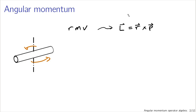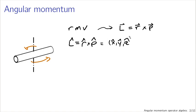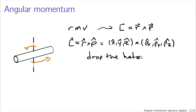We can make an analogous expression in quantum mechanics simply by replacing the arrows with hats. Let's define a momentum operator L-hat equal to R-hat cross P-hat, where P-hat is a vector momentum operator and R-hat is a vector position operator — essentially X-hat, Y-hat, Z-hat as a vector crossed with PX-hat, PY-hat, PZ-hat in Cartesian coordinates. At this point I'm going to save writing and drop the hats; for the most part in this lecture I'll be working with operators.